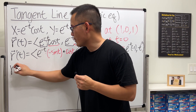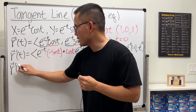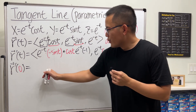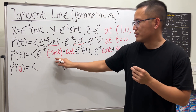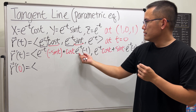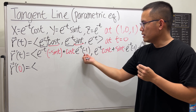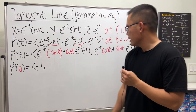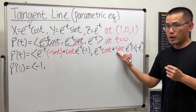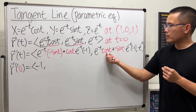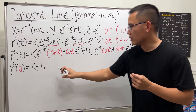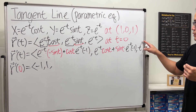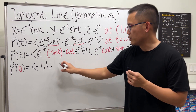Now plugging in T equals 0 — this is nice because we're using 0. For the X component: sine of 0 is 0, so that term doesn't matter; e to the 0 is 1 times negative 1 gives negative 1; cosine of 0 is 1, so overall we get negative 1. For Y: that term doesn't matter; cosine of 0 is 1 times 1 gives 1. For Z: e to the 0 is 1 but it's negative, so negative 1.